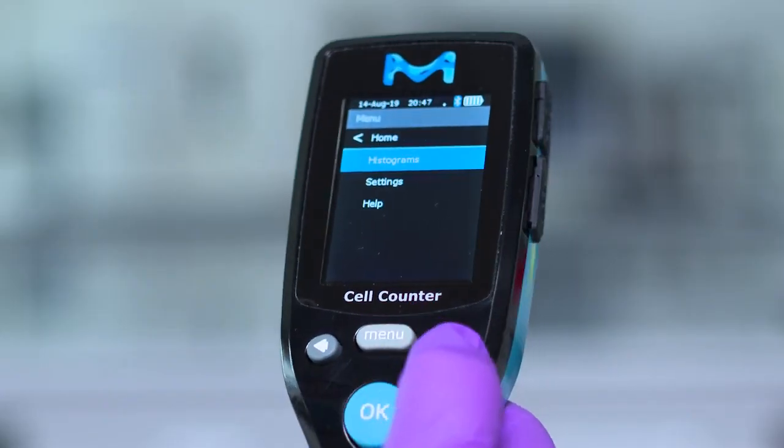The other way is to scroll to the desired histogram, select menu, histograms, and OK.